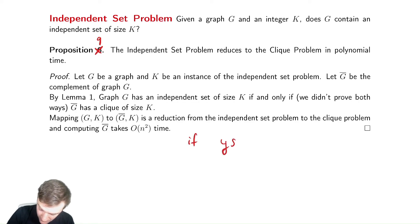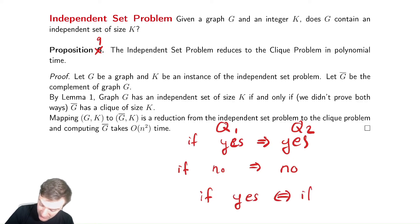The reduction requires the following two things. If yes to part one, you need yes to part two. And if no, this is all Q1 and this is all Q2. If no, you need no. Alternatively, an equivalent reduction is if you have yes, you need to have it if and only if you have yes on the other side. That guarantees that yeses map to yeses and yeses map to yeses, which is the same as saying yeses map to yeses and noes map to noes.